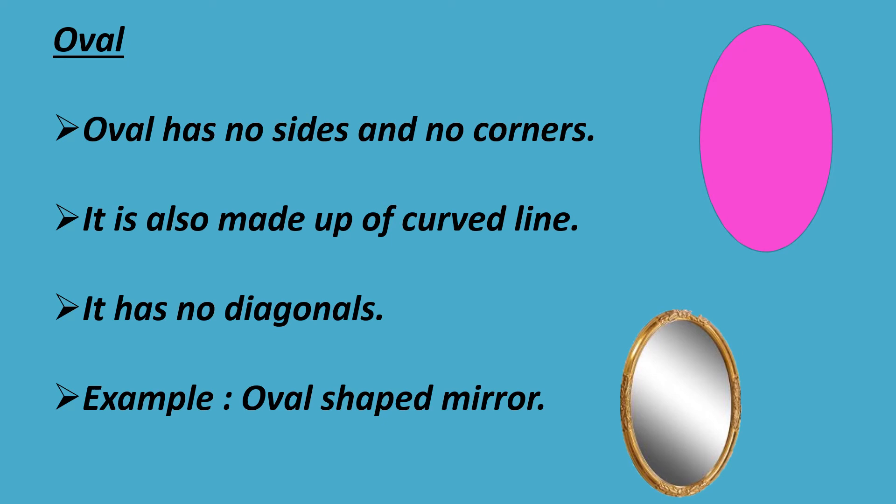Oval. Oval has no sides and no corners. It is also made up of a curved line. It has no diagonals. Example: oval-shaped mirror.